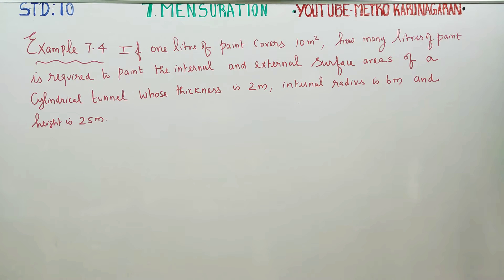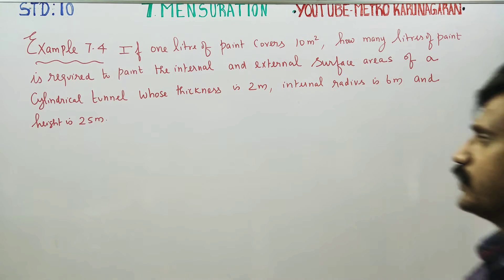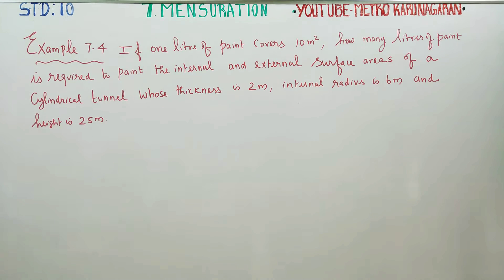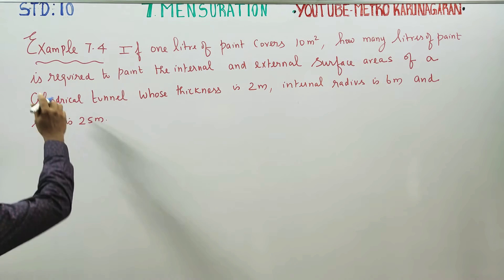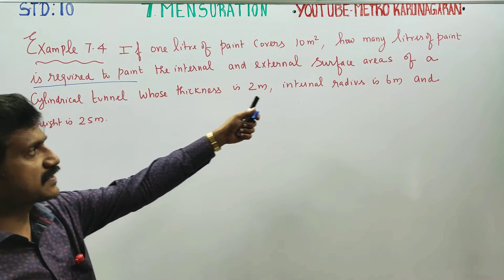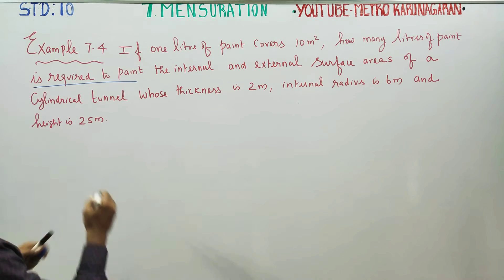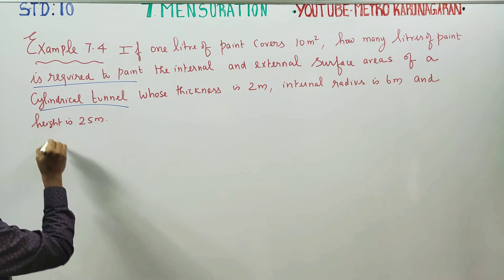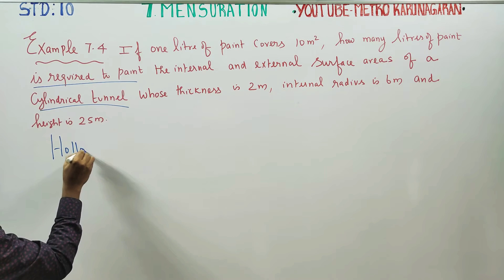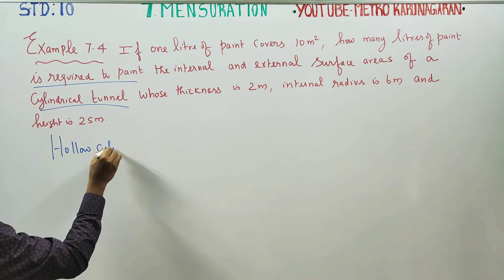Dear 10th standard students, in mensuration Example 7.4: if one liter of paint covers 10 square meters, how many liters of paint is required to paint the internal and external surface area of a cylindrical tunnel? A cylindrical tunnel is a hollow cylinder.